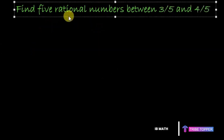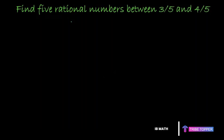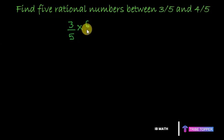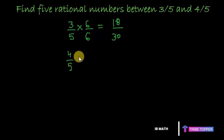Now we move to the next question: find five rational numbers between three by five and four by five. We multiply and divide these numbers by any number greater than five. I prefer to take six here, so I write three by five multiplied and divided by six, giving eighteen upon thirty. The other number, four by five, multiplied by six upon six, gives twenty-four by thirty.